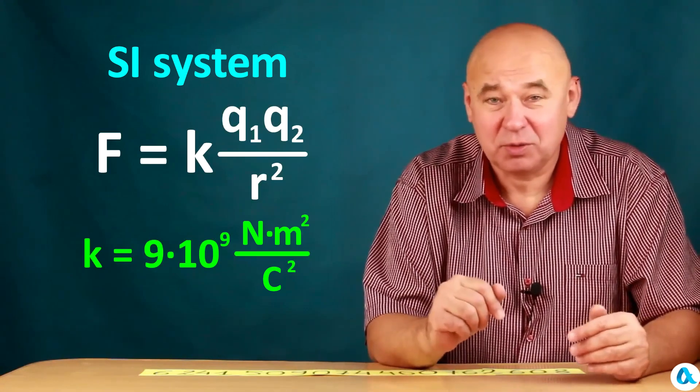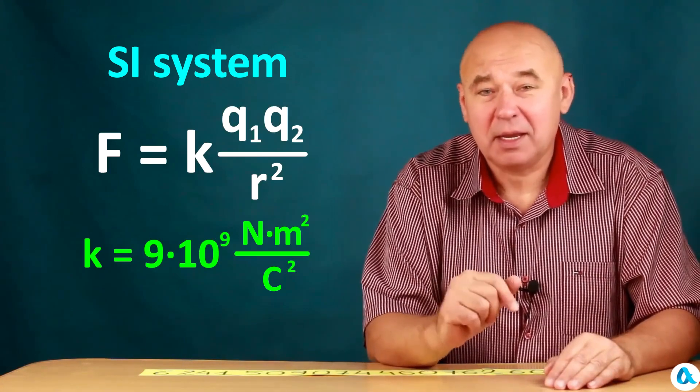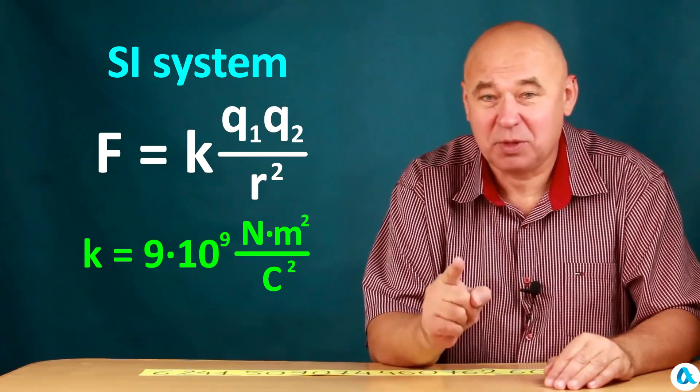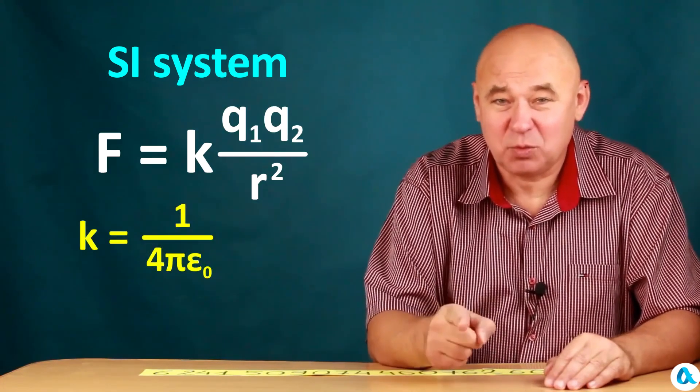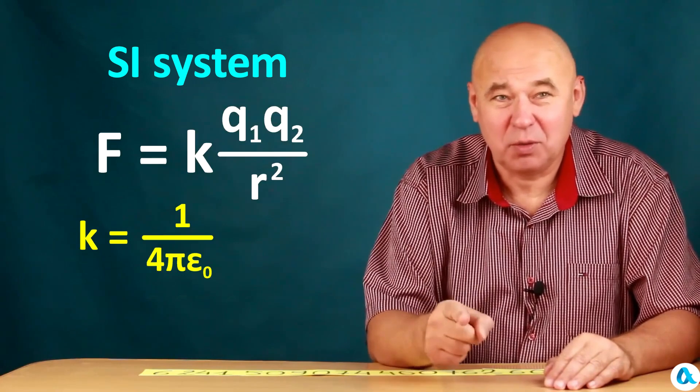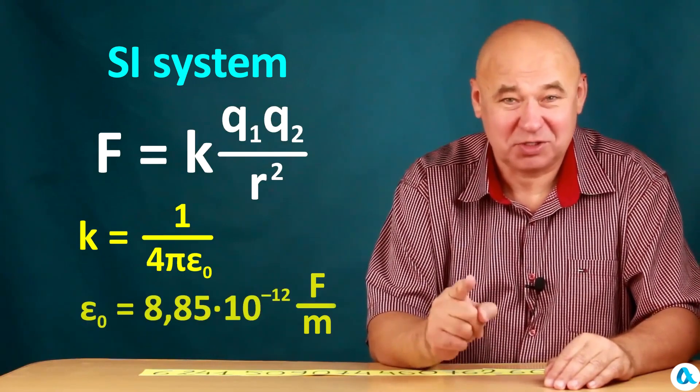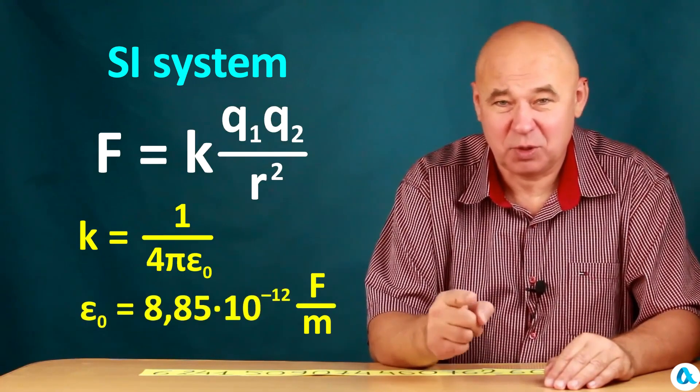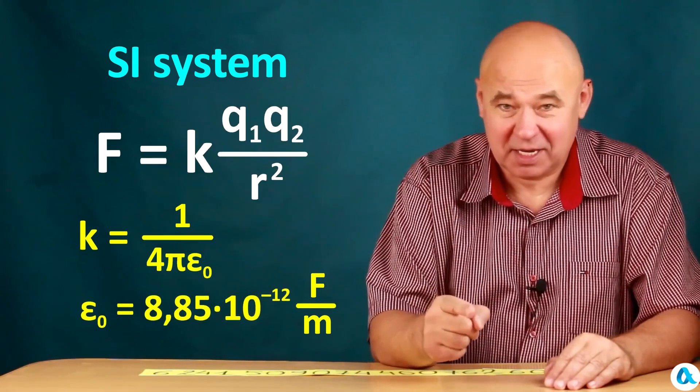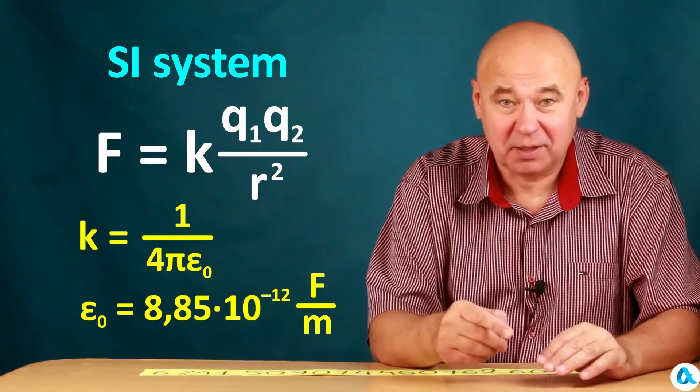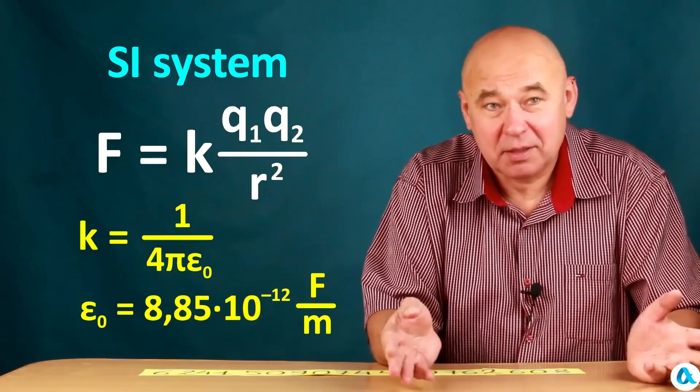But in an advanced textbook, it will be written that k is 1 over 4π epsilon 0, where epsilon 0 is the electric constant. And it is equal to 8.85 times 10 to the negative 12th farads per meter. But this clearly goes beyond the scope of our video today.